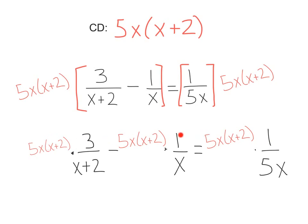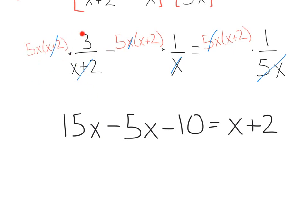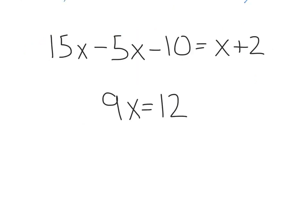After distributing that out, we're left with this guy right here. Now is the fun part where we can cancel. These x plus 2's are going to cancel out. This x is going to cancel with this x. And over here, the 5x and the 5x are gone. And distributing everything out, we have 5x times 3, 15x. Negative 5 distributed, negative 5 times x is minus 5x. Negative 5 times 2 is minus 10. Remember to distribute that negative. Equals, and we're just left with the x plus 2 over here.